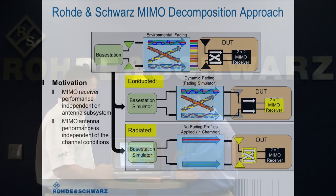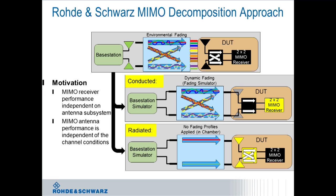For the MIMO receiver test — the conducted test — we are basically eliminating the antennas, but we introduce fading using a dynamic fading simulator. In the radiated approach, we're not applying any fading inside the chamber simply because the antenna performance is independent of the channel conditions. So, fading in the conducted approach and no fading profiles in the radiated approach at all. In the conducted approach, we're using fading to determine how the receiver algorithms can handle it, and in the radiated approach, we don't use fading because it doesn't impact the antenna performance.